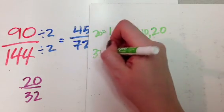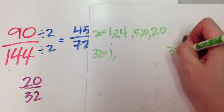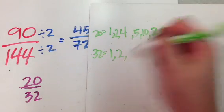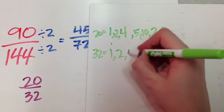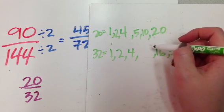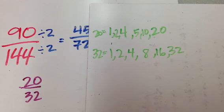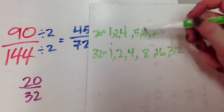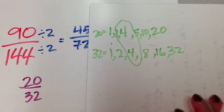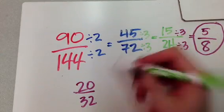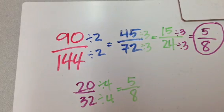And what are the factors of thirty-two? Oh gosh, one and thirty-two, two and sixteen, three can't go in, four can go in eight times though. Here are my factors. I can see, oh, yes, look, there's my greatest common factor, right?